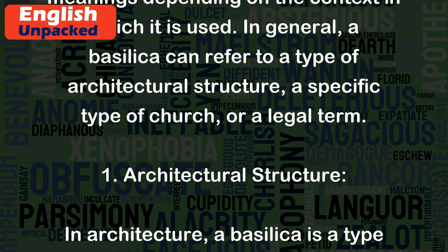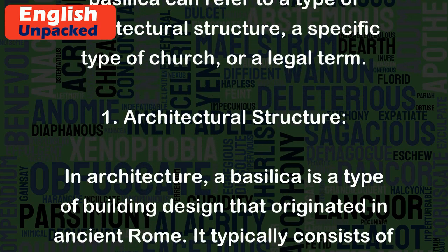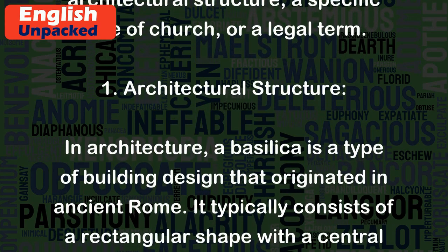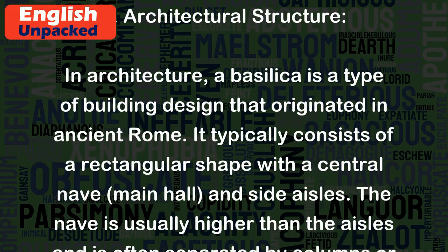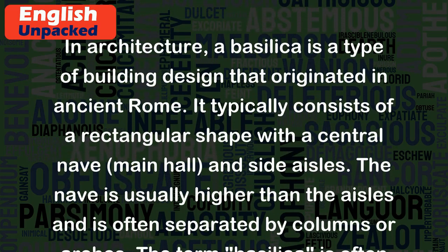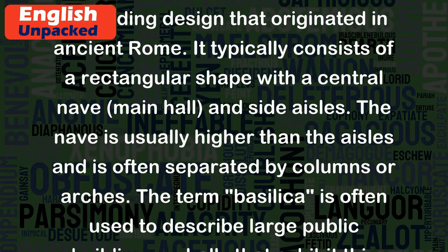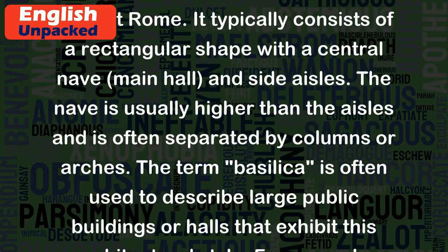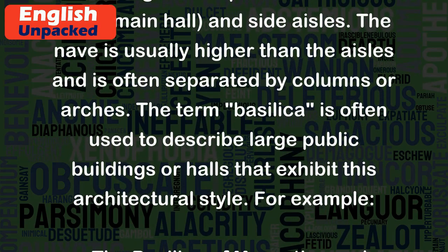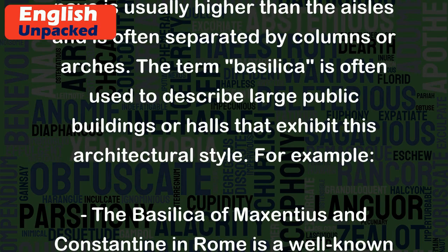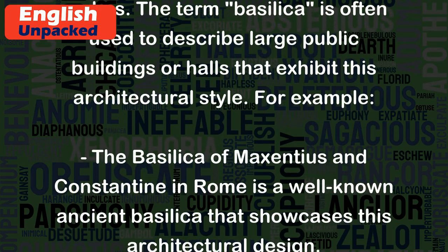1. Architectural Structure. In architecture, a basilica is a type of building design that originated in ancient Rome. It typically consists of a rectangular shape with a central nave, or main hall, and side aisles. The nave is usually higher than the aisles and is often separated by columns or arches. The term basilica is often used to describe large public buildings or halls that exhibit this architectural style.